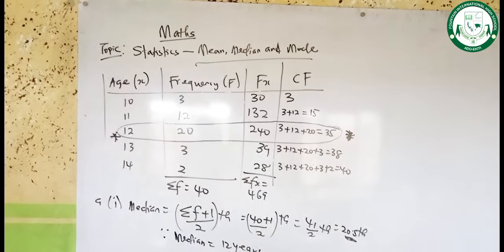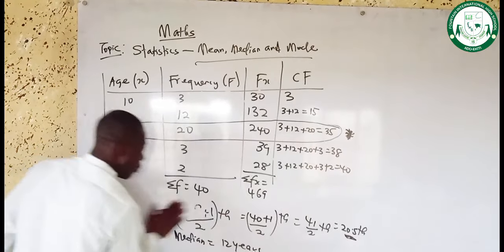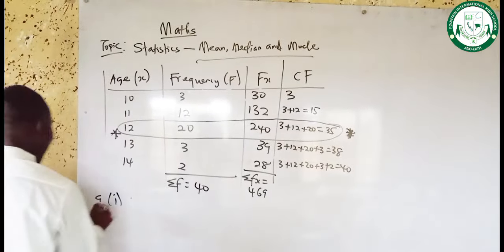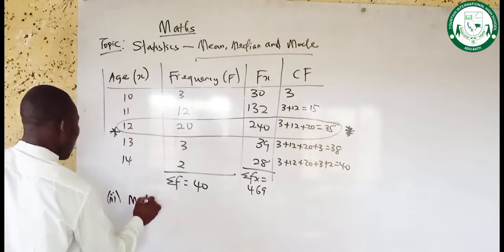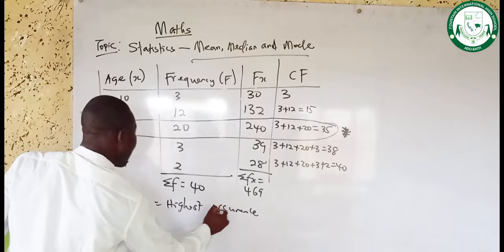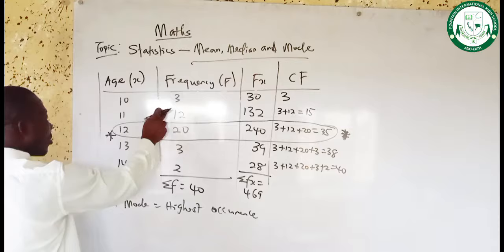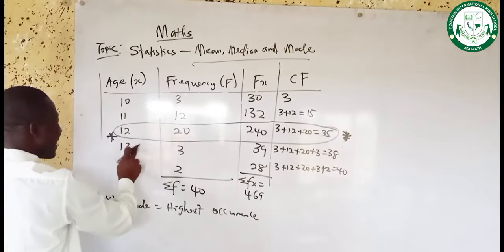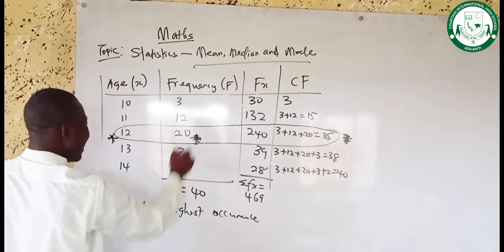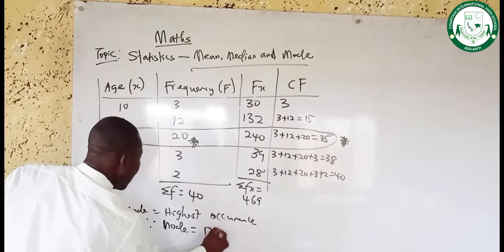That is all about the median. Now let's find the mode. The mode means the highest occurrence — the frequency that occurs most. Age 10 occurs 3 times, age 11 occurs 12 times, age 12 occurs 20 times, age 13 occurs 3 times, and age 14 occurs 2 times. Age 12 has the highest frequency of 20. Therefore, our mode is 12 years.